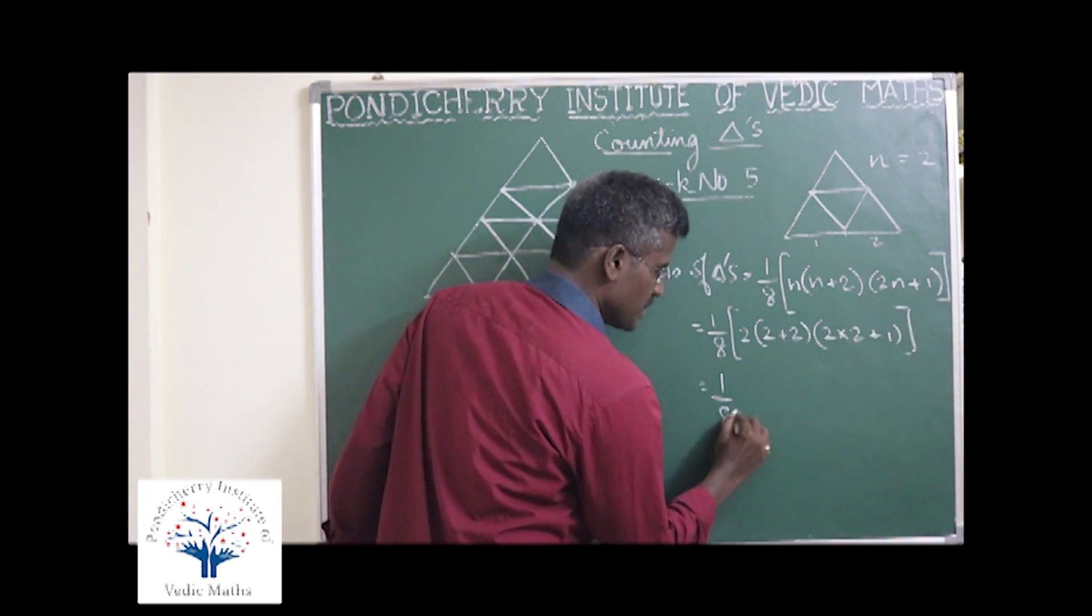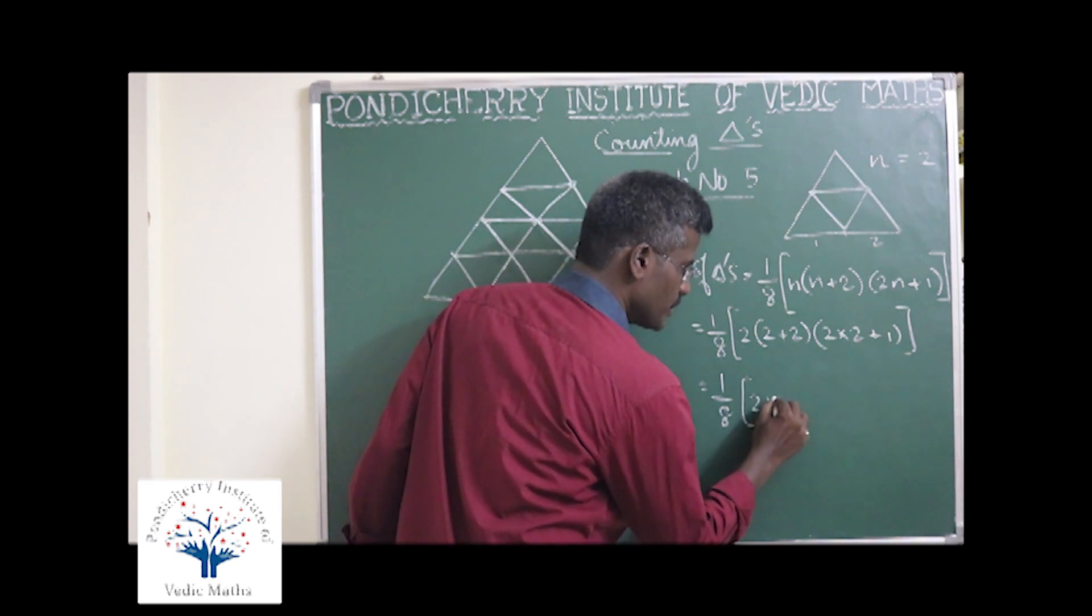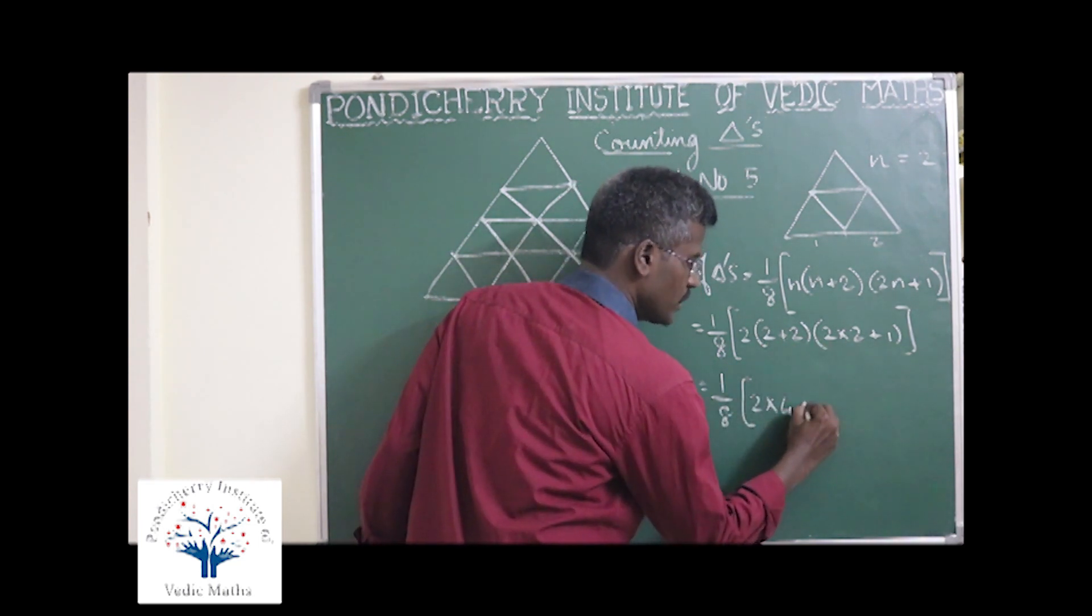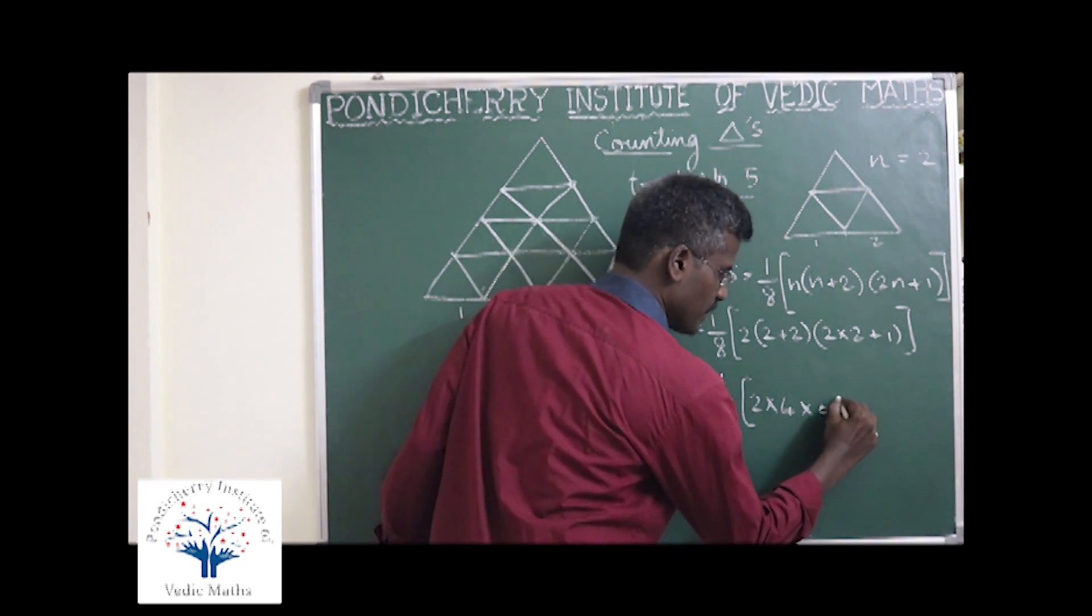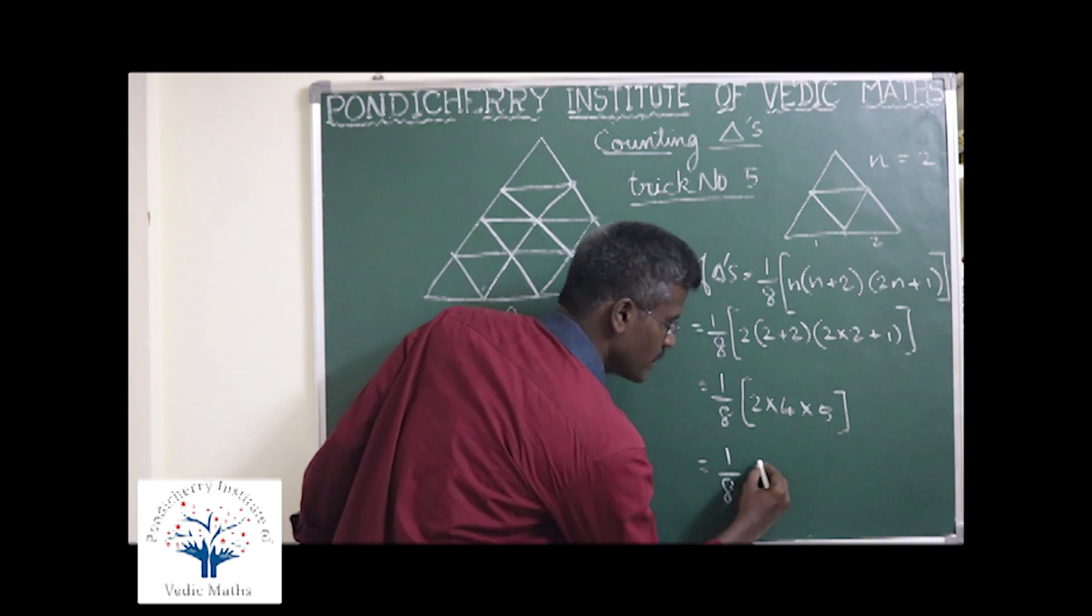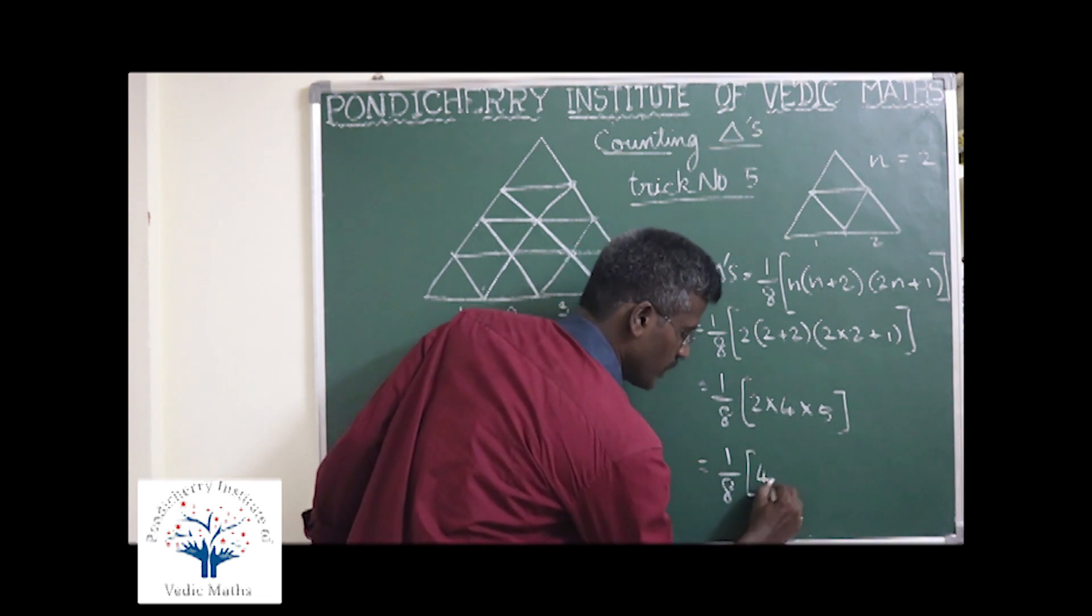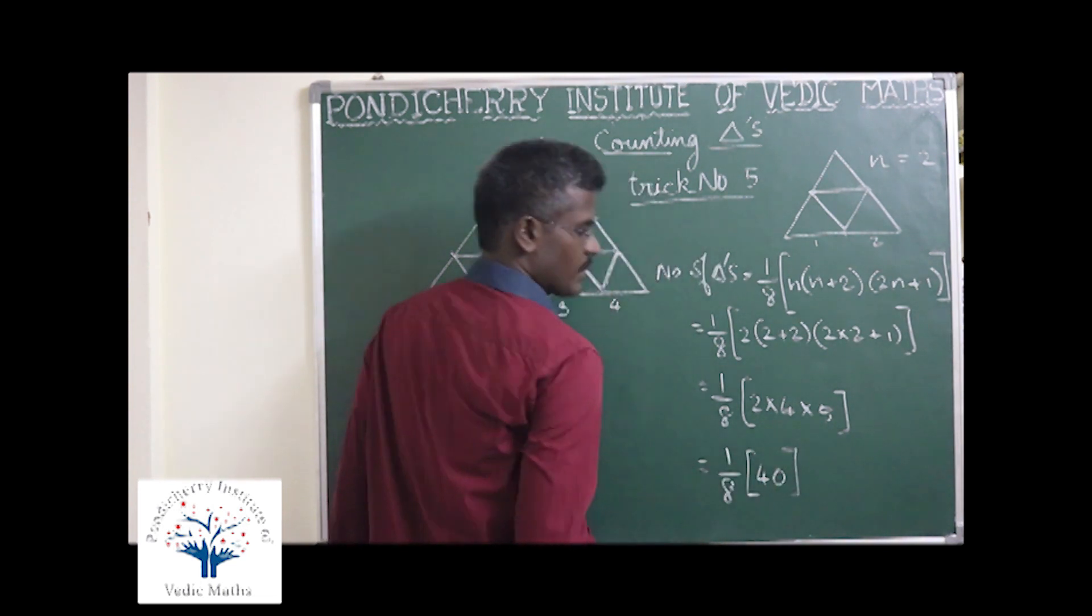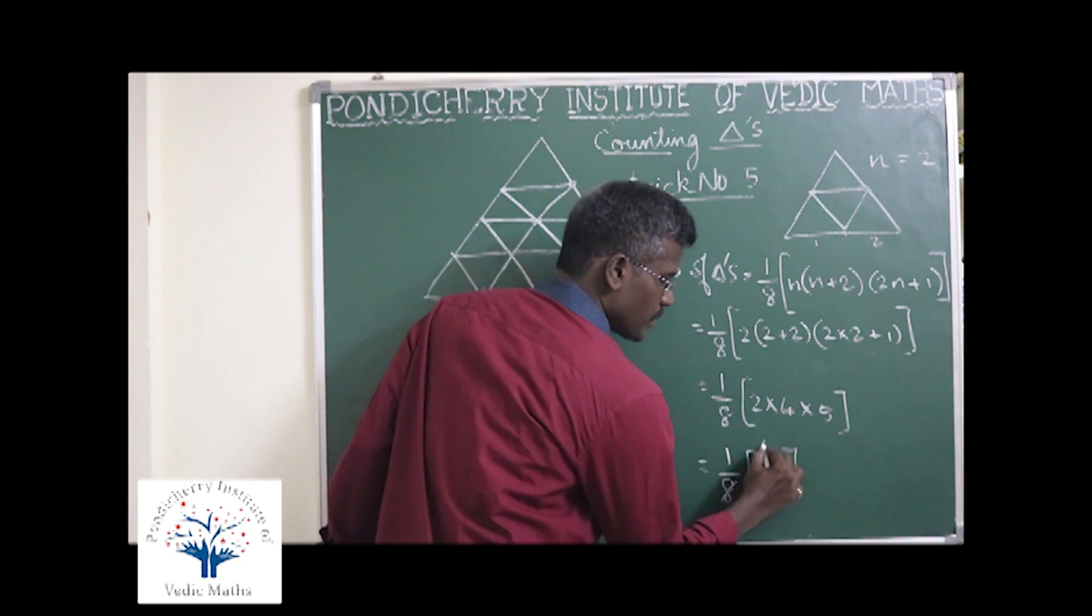1 by 8 into 2 into 2 plus 2, 4 into 2, 2 plus 4 plus 1, 5. Which is equal to 1 by 8 into 40. This is equal to 5.